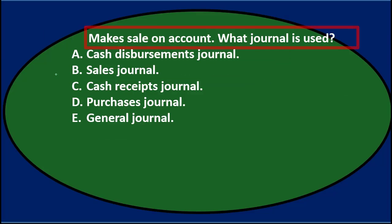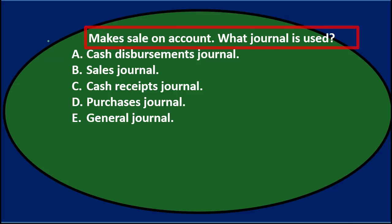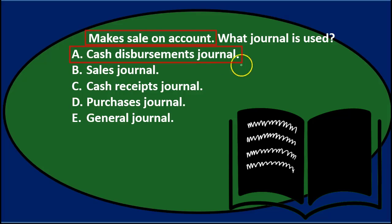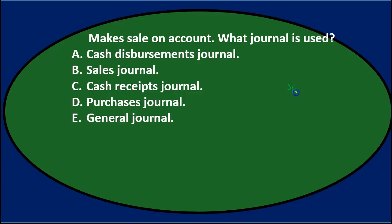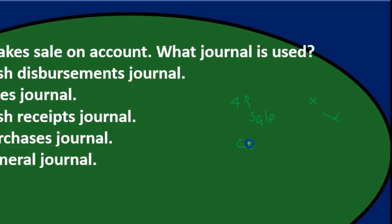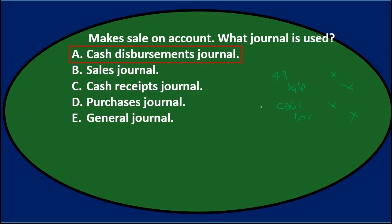Next question: Makes sale on account — what journal is used? A. Cash disbursements journal. B. Sales journal. C. Cash receipts journal. D. Purchases journal. Or E. General journal. If we write out the journal entry for a sale on account: we credit sales revenue, debit accounts receivable (no cash yet), and may also have cost of goods sold with inventory going down. A. Cash disbursements — we didn't pay cash, so that doesn't fit. So A is eliminated.